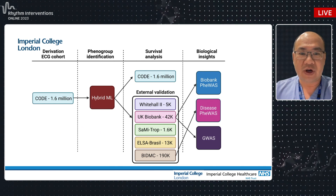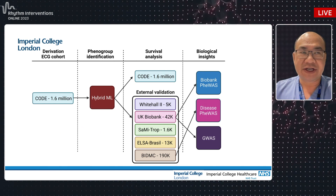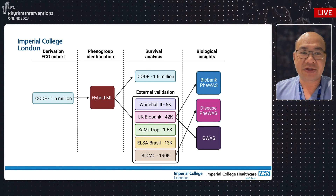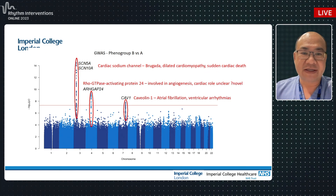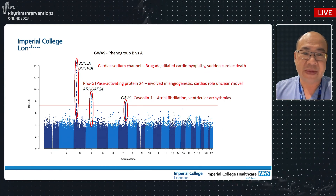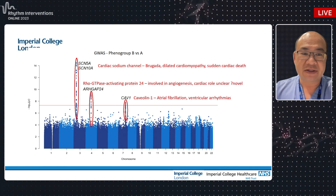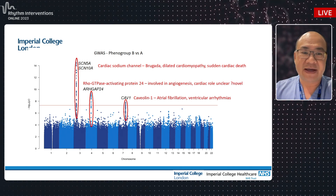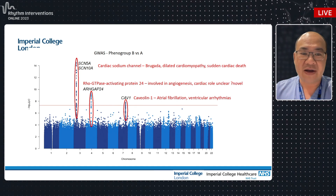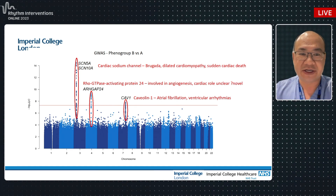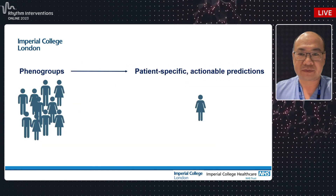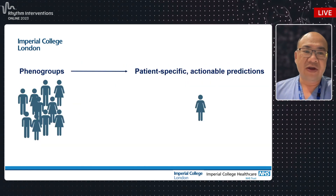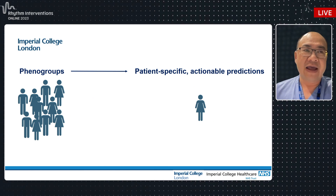We also looked at genome-wide association hits and genotypic associations with the model's predictions. The model tends to predict individuals as high risk if they have specific abnormalities in certain channels: SCN5A and SCN10A — the usual suspects — as well as CAV1 and GJA24, a novel hit we found on GWAS. So there appear to be genotypic reasons why someone is predicted as a high-risk individual.